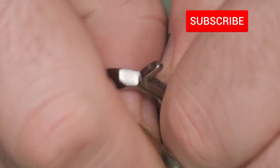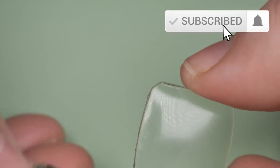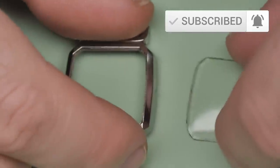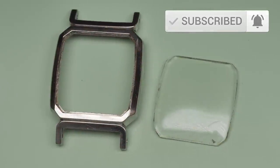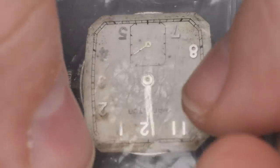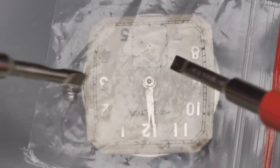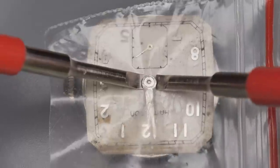With the bezel removed, I can pop the mineral glass crystal loose. Glass crystals use a tougher adhesive and can be difficult to remove. Pressing around the edges of the crystal to try not to shatter it, I eventually spring it free. Now I can get back to the dial and the movement.